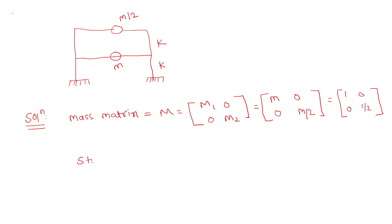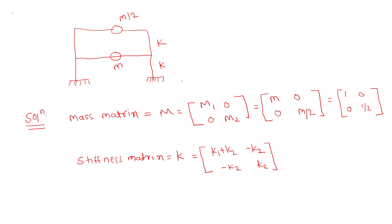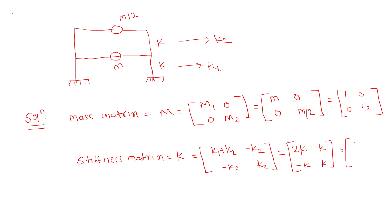The second step is to prepare the stiffness matrix, also called the K matrix. For this type of lumped mass structure, it is [k1+k2, -k2; -k2, k2]. The stiffness of the first story is k1 and the second story is k2. So k1+k2 equals k+k equals 2k. This gives us k × [2, -1; -1, 1].